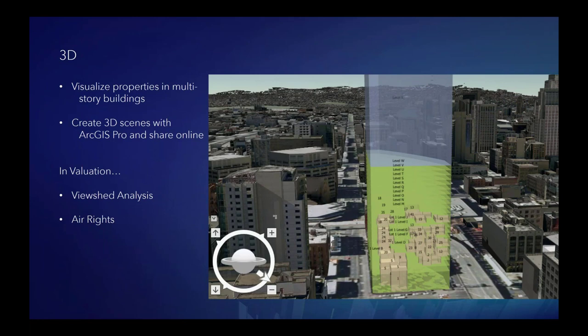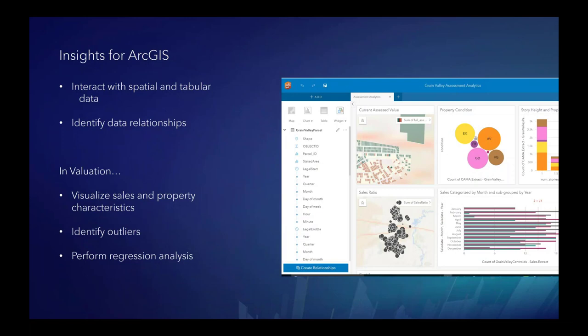If you are valuing properties in a multi-story building, consider elevation when preparing your data. With new tools in ArcGIS Pro, it is possible to visualize viewshed from a specific property in a multi-story building and assign a score or volume which can be added as an additional variable in your valuation analysis — a similar workflow could also be applied to air rights. When you are ready to explore your data, it is important to understand what attributes are valuable. Insights for ArcGIS was created with this interaction in mind — in valuation, using Insights is an excellent way to identify outliers and visualize discrepancies in sales ratio. You can also perform lightweight regression analysis and visualize results quickly in charts and on maps.